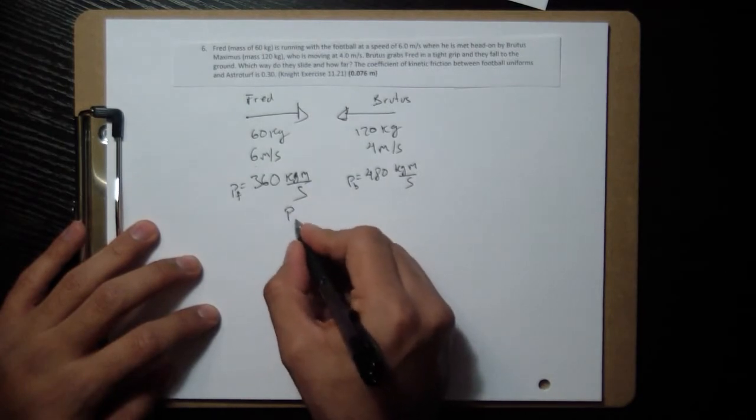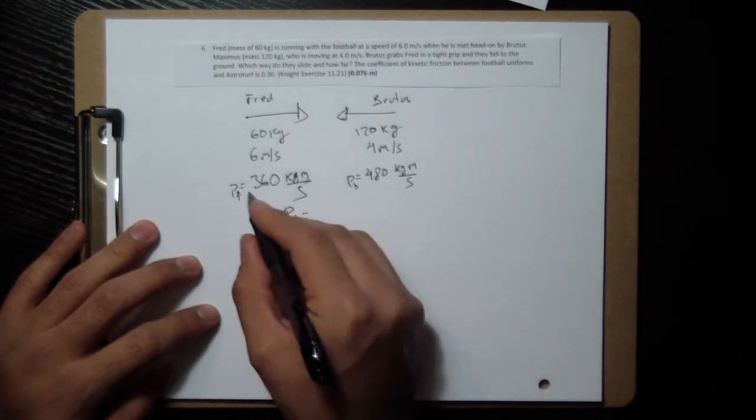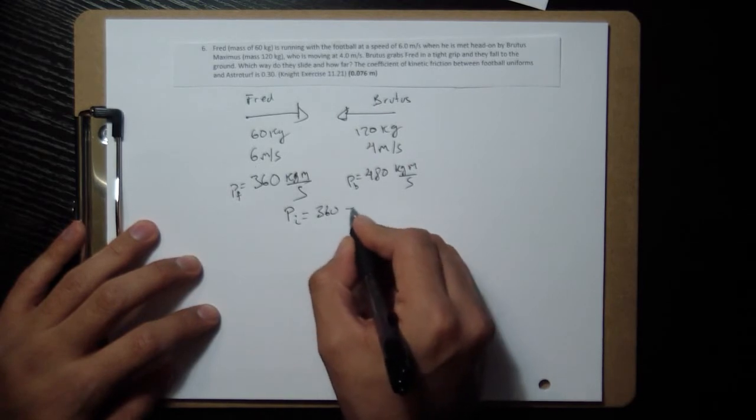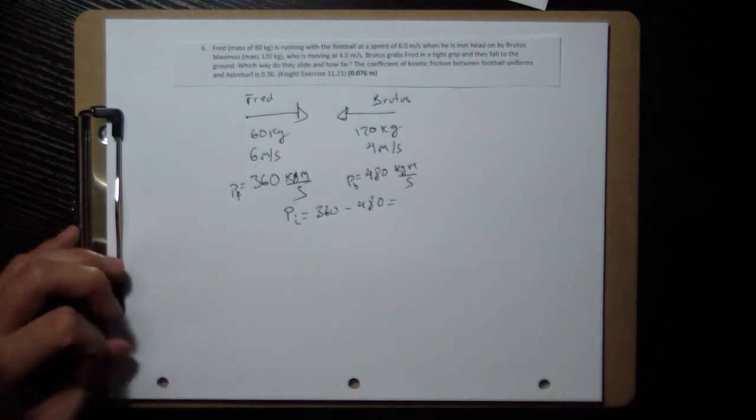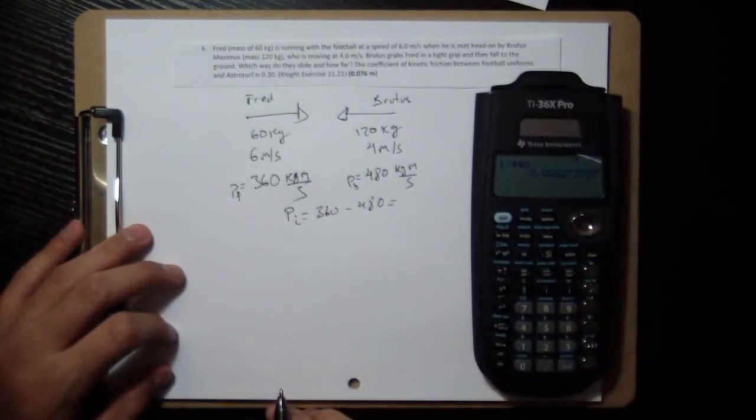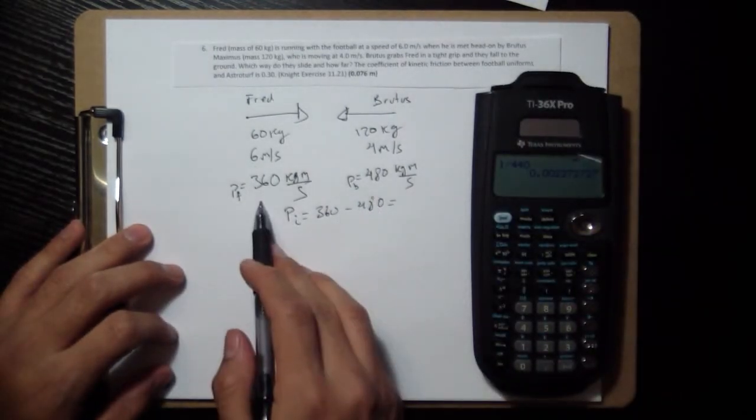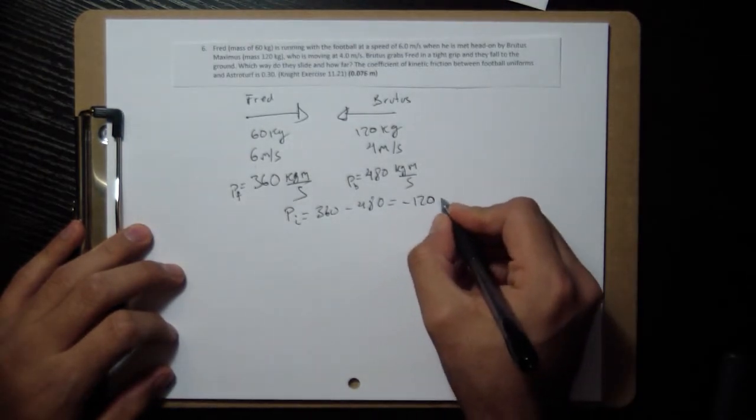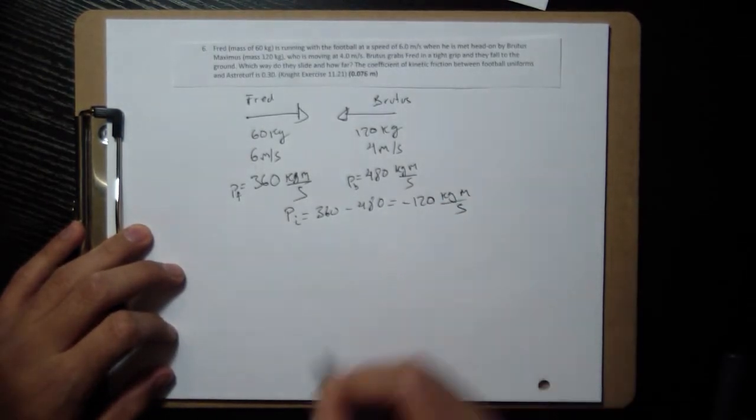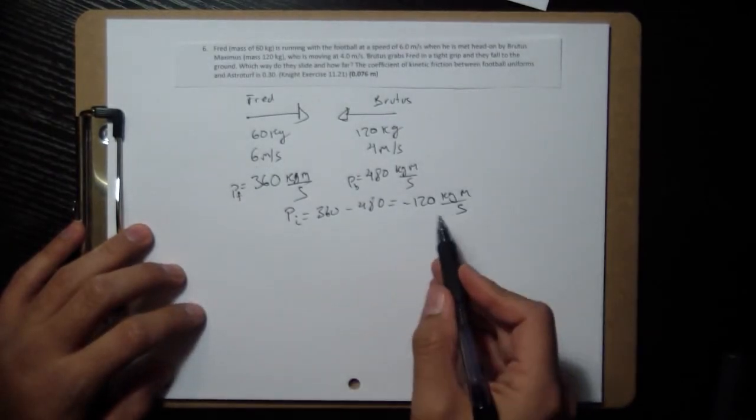Total momentum before is going to be this 360 minus 480, which if we subtract them, 480 minus 360, 120. But negative. So that's our momentum before.